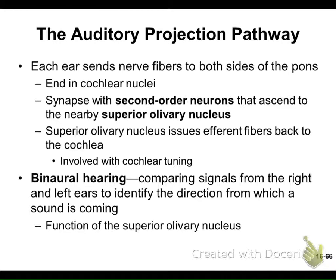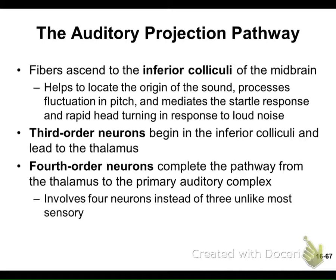With binaural hearing, both ears send signals, and the superior olivary nucleus is where we determine whether a signal is coming more from the left or the right. The fibers then ascend to the inferior colliculi for sound localization. A third-order neuron goes from the inferior colliculi to the thalamus, and then a fourth-order neuron completes the pathway — going to the primary auditory cortex in the superior margin of the temporal lobe.